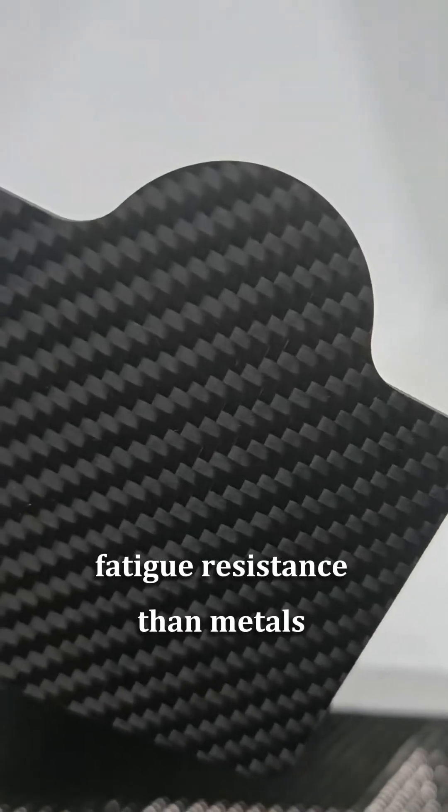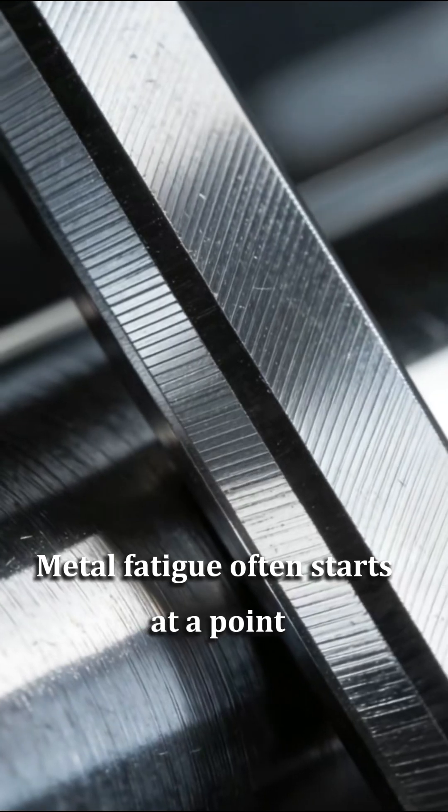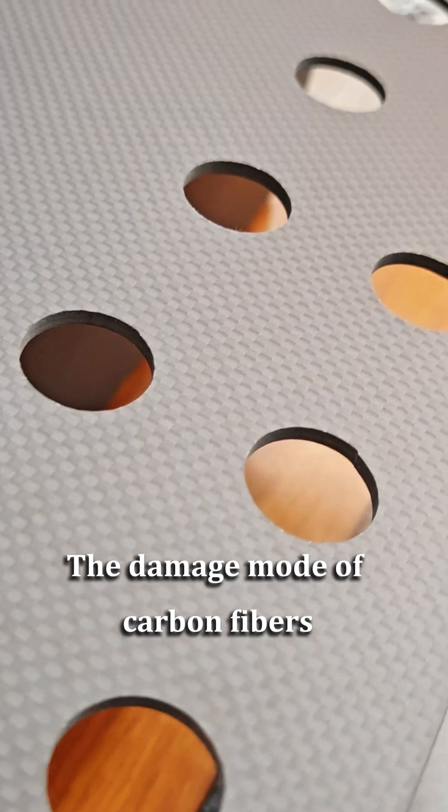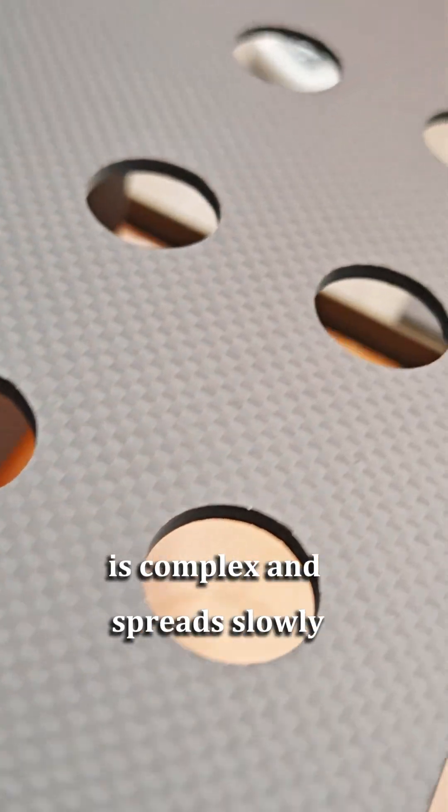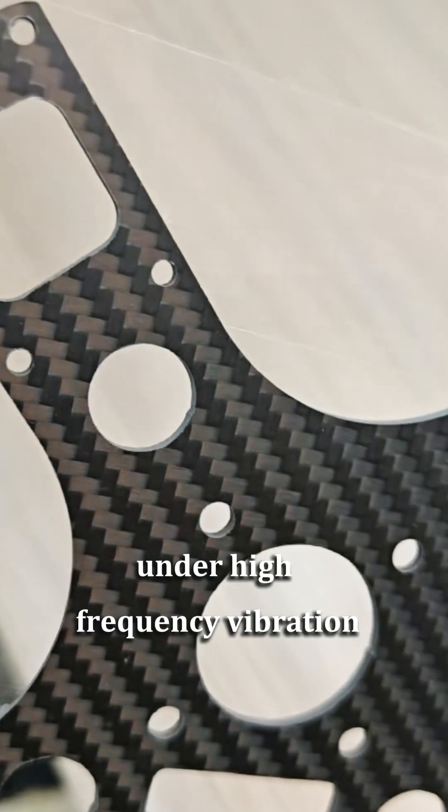Carbon fiber has better fatigue resistance than metals under alternating loads. Metal fatigue often starts at a point and then spreads into cracks. The damage mode of carbon fibers is complex and spreads slowly, and they have a longer service life under high-frequency vibration.